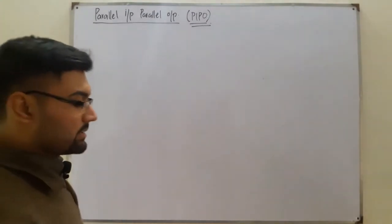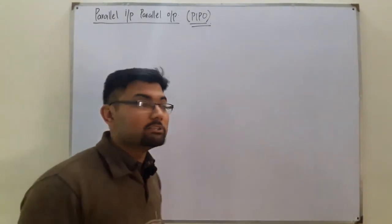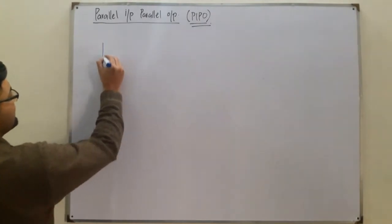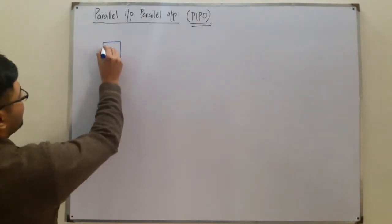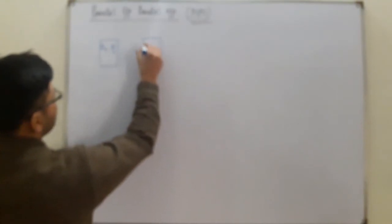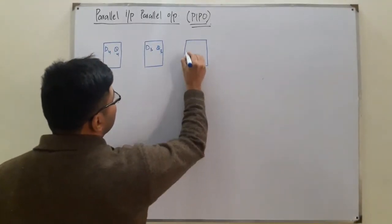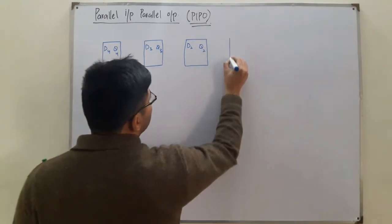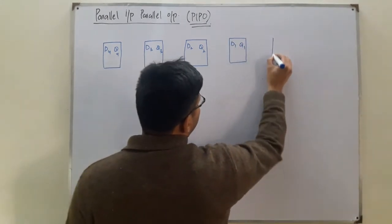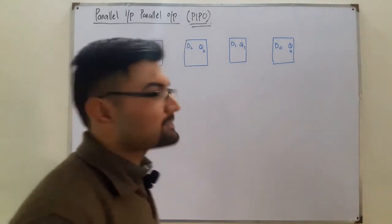Now, what is a buffer? I'll tell you in a minute. For this example, let's do a five-bit register. For five bits, I require five flip-flops: D4 Q4, D3 Q3, D2 Q2, D1 Q1, and D0 Q0.